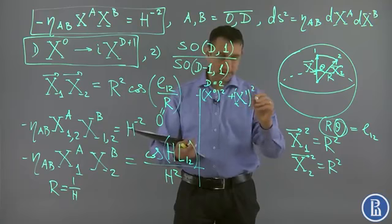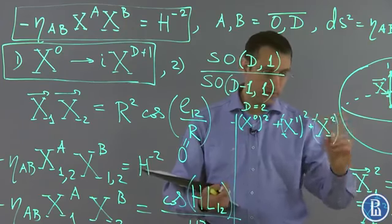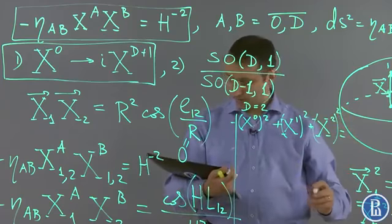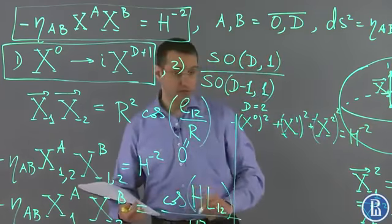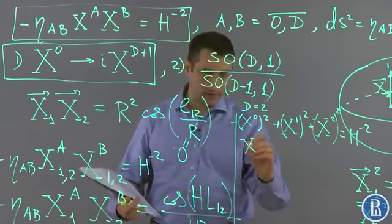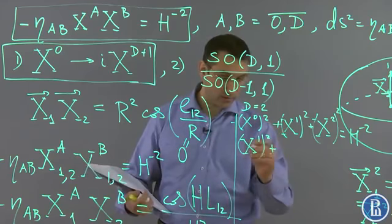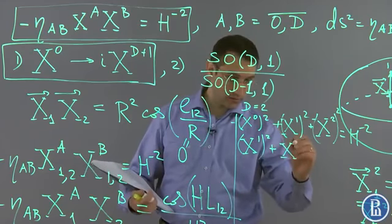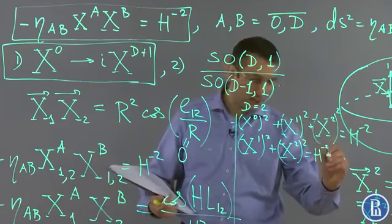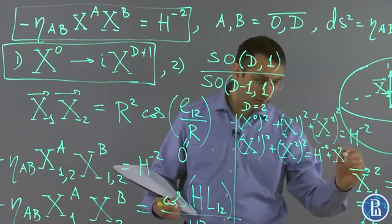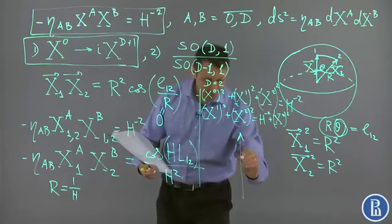x2 squared equals h to the second power, which then tells us that for every x0 we have a circle: x1 squared plus x2 squared equals h squared plus x0 squared on this space.